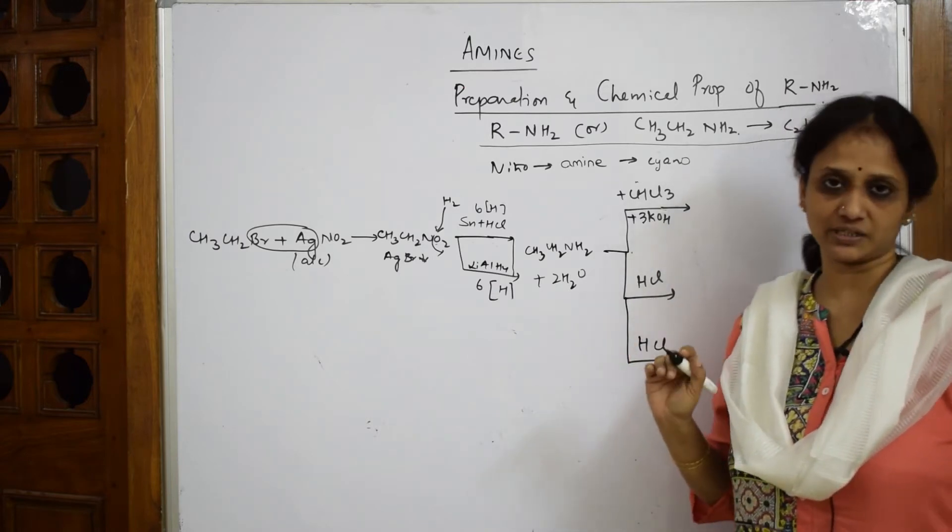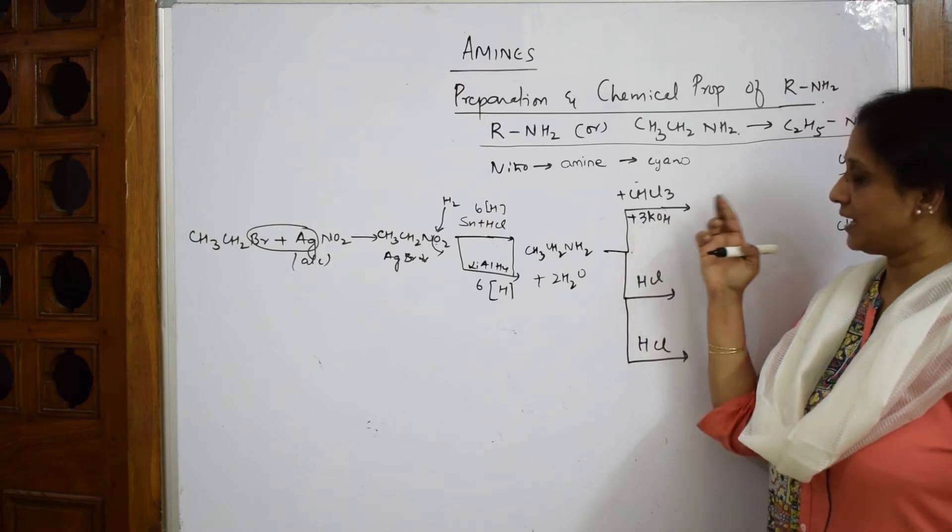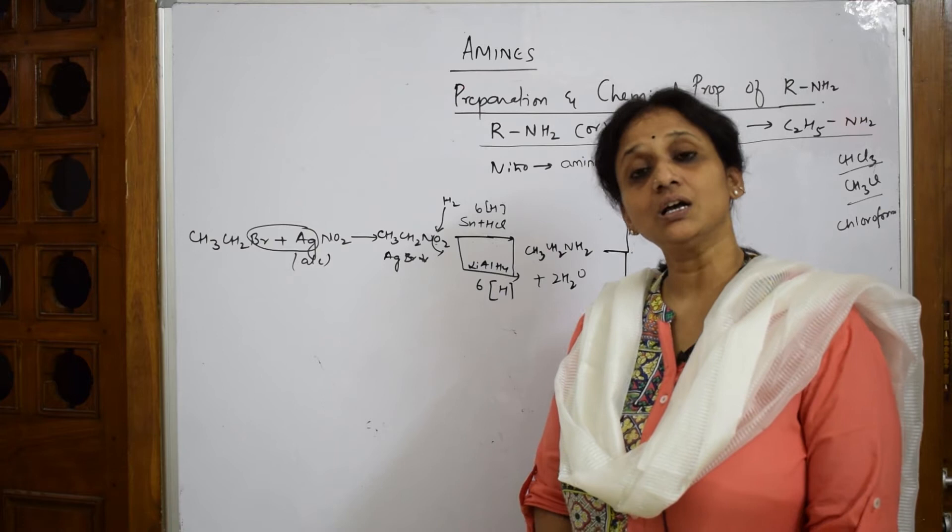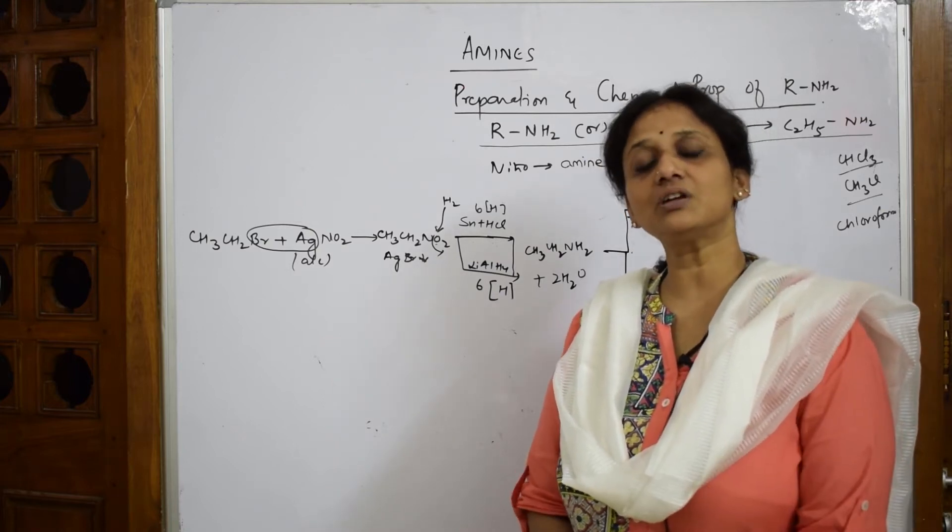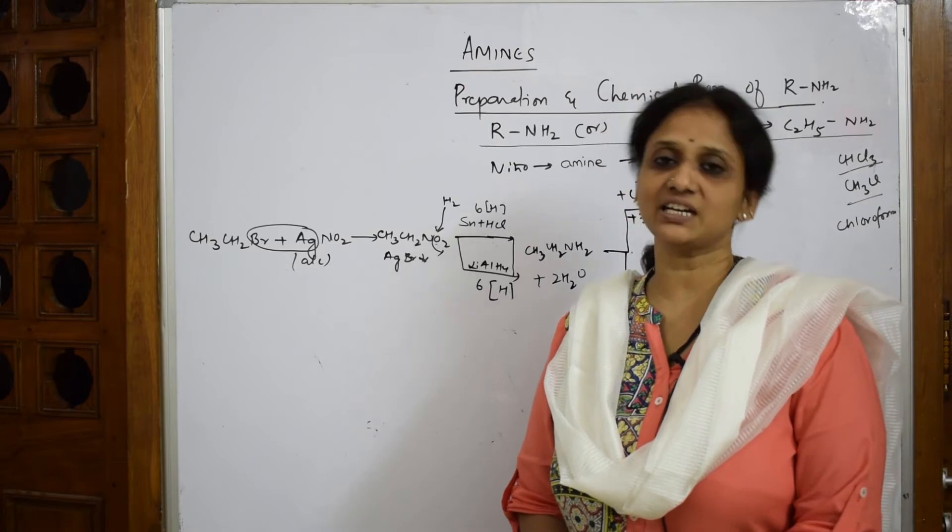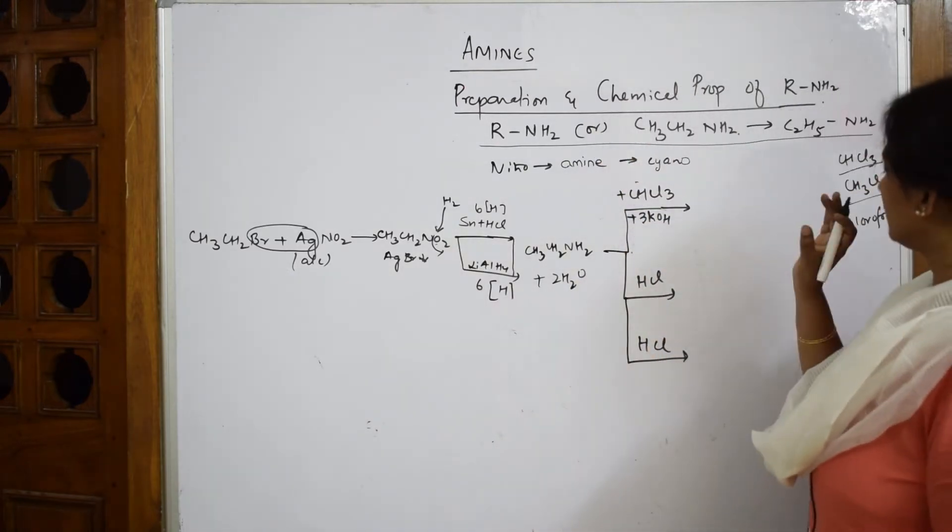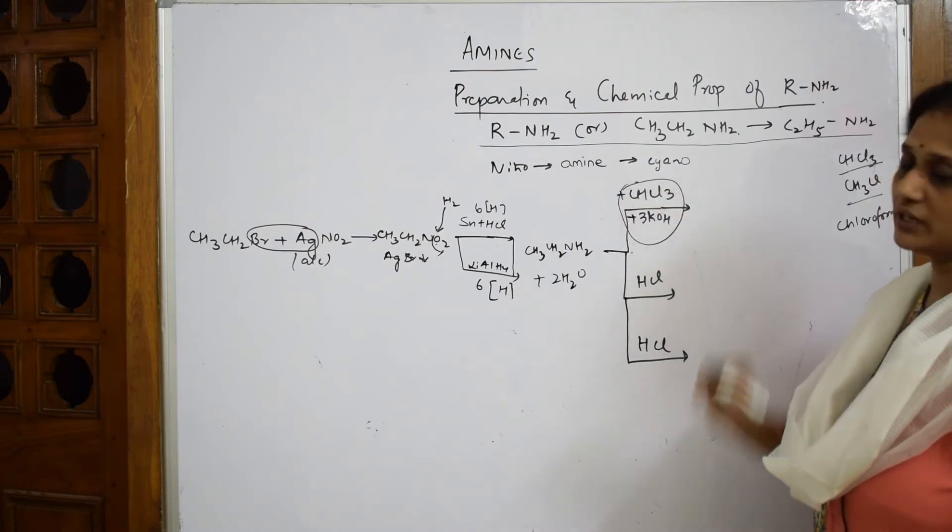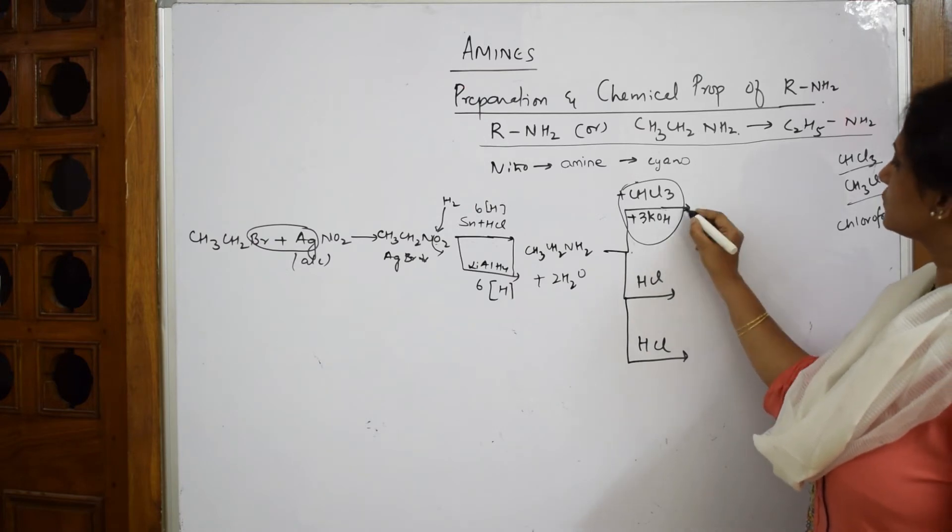If you are treating amines with chloroform and potassium hydroxide, that particular reaction is called carbylamine reaction. Remember that, or it can also be called as Hoffman's isocyanide test or isocyanide reaction. Whenever you see chloroform combination with KOH, yes, that's also called carbylamine test or reaction.